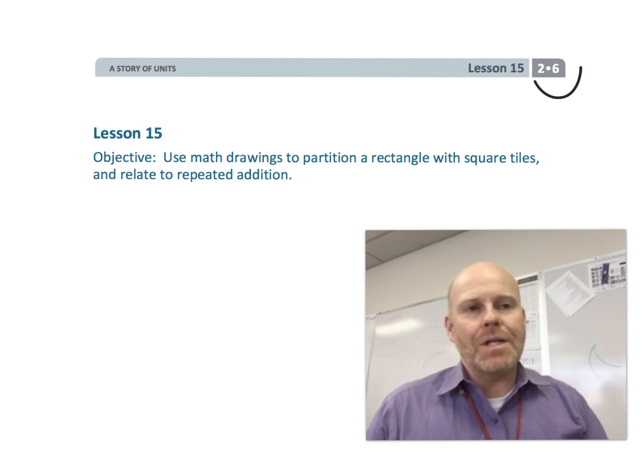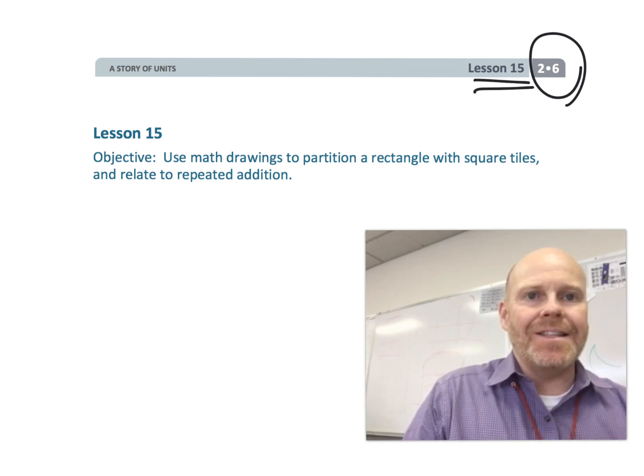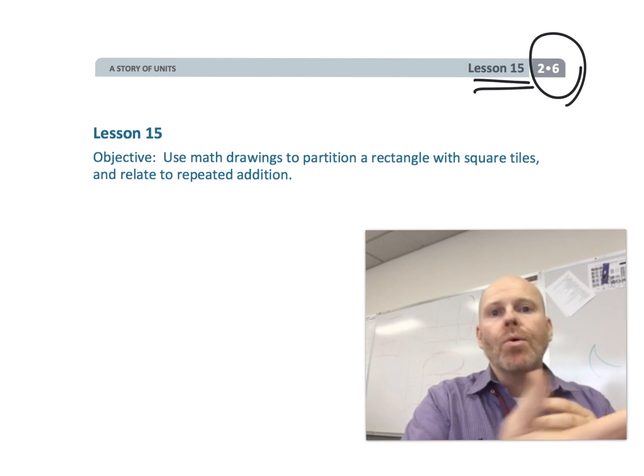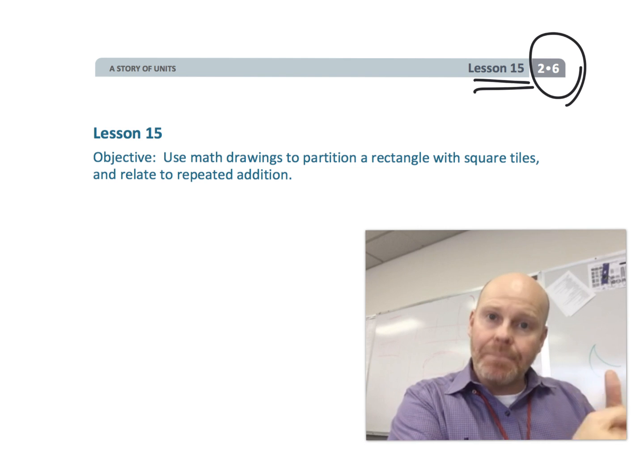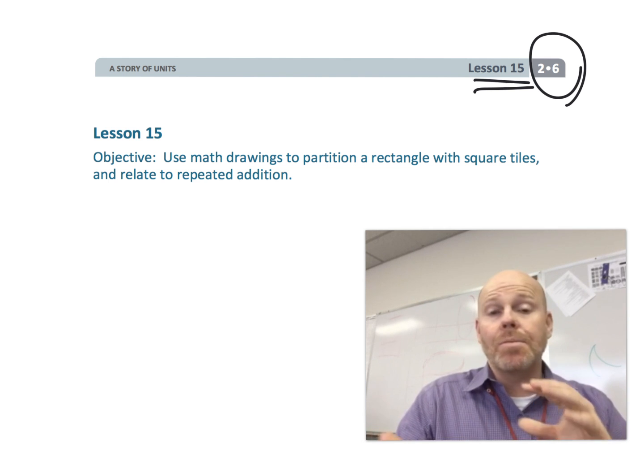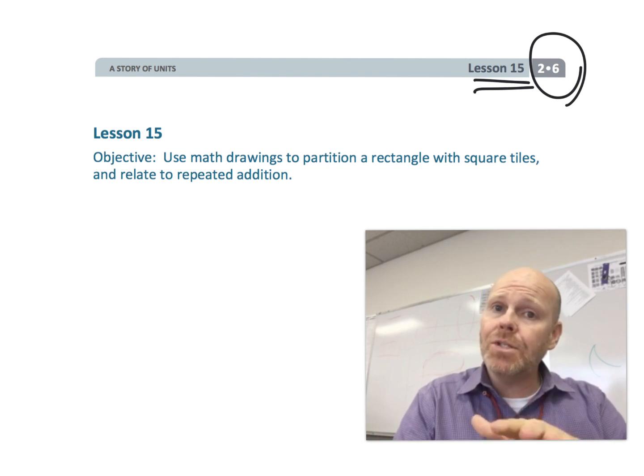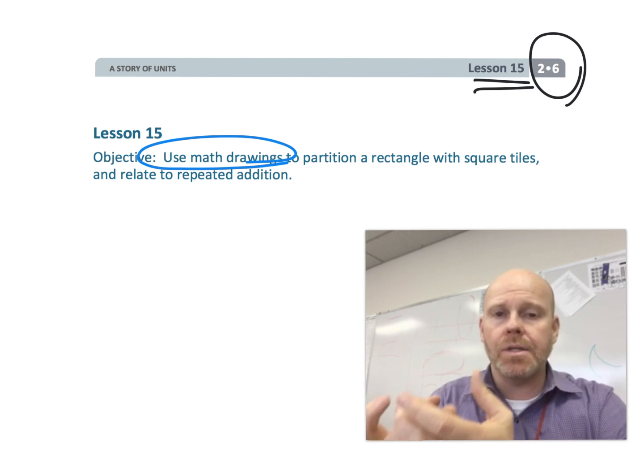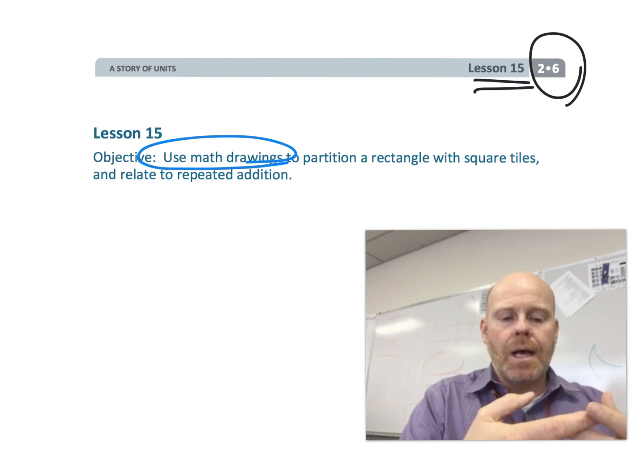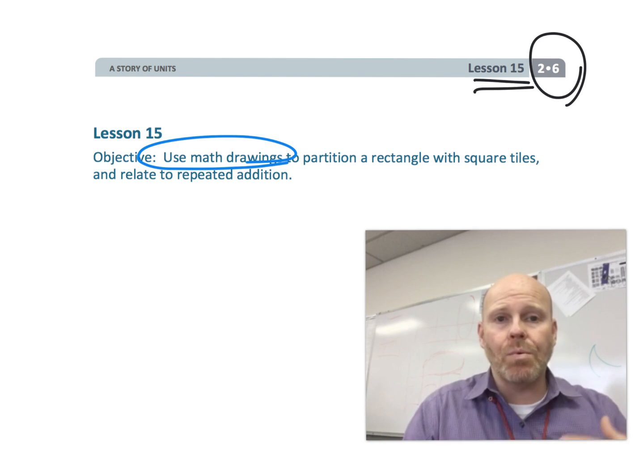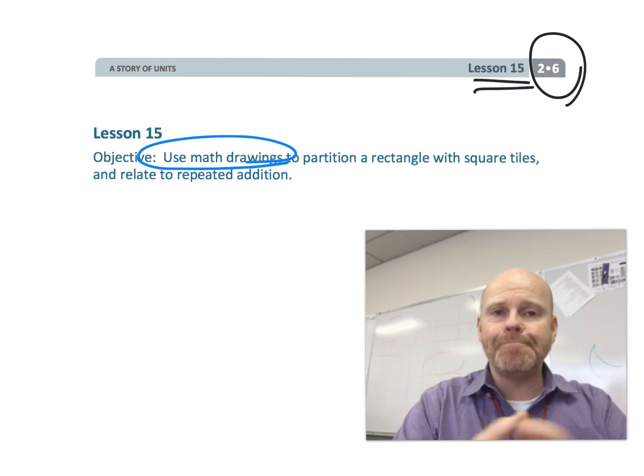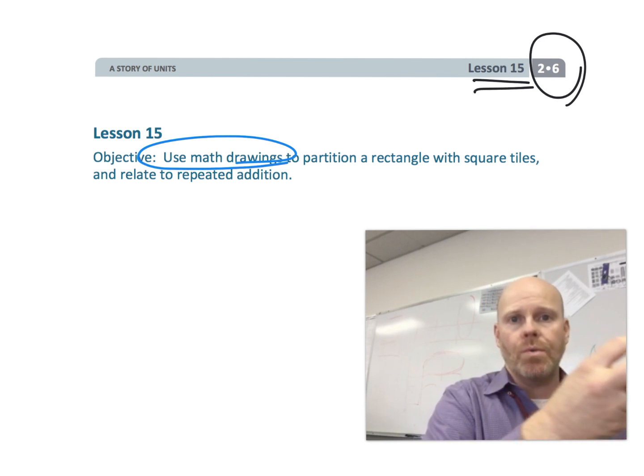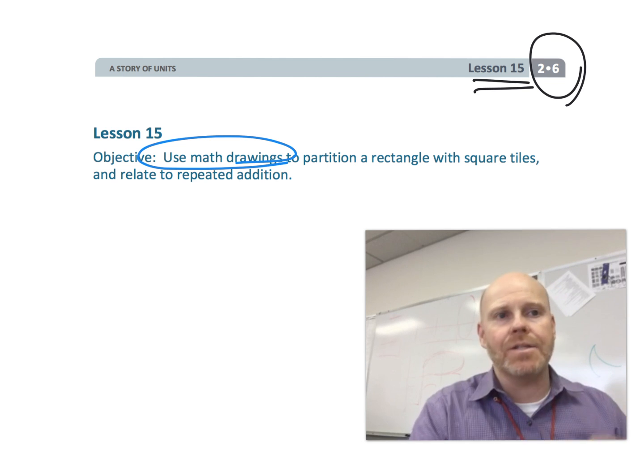This is Grade 2 Module 6 Lesson 15. In this lesson, students are taking one more step through that pictorial stage and towards the abstract stage. Students are going to be using math drawings, doing their own drawings. We've gone from playing with counters and teddy bears and coins, to the pictorial stage where we were giving them drawings of arrays, and now students are going to be drawing their own arrays, moving towards that abstract direction.